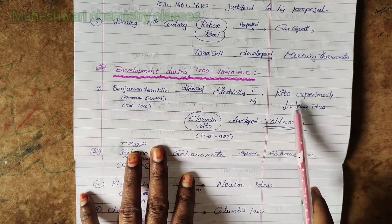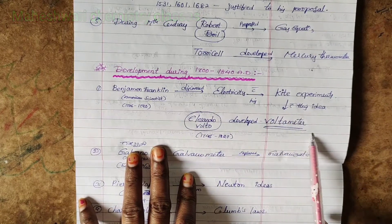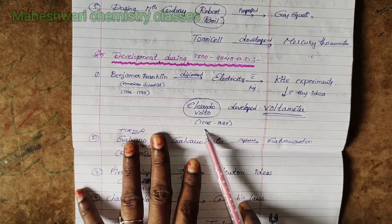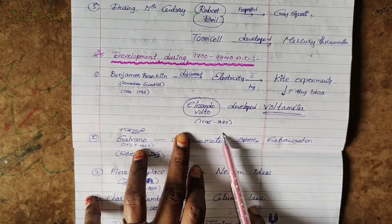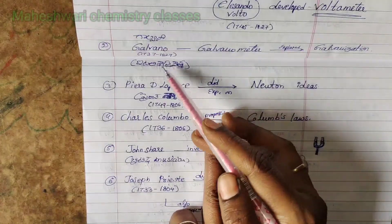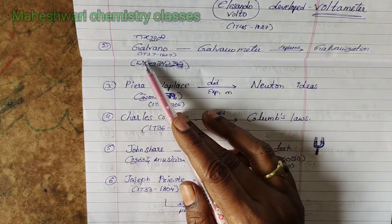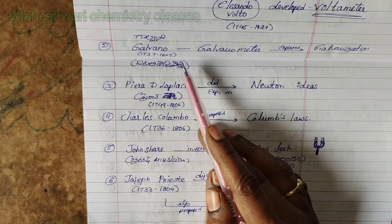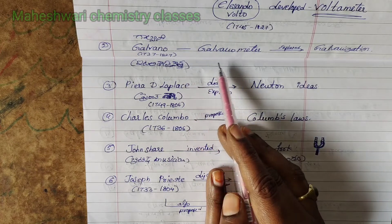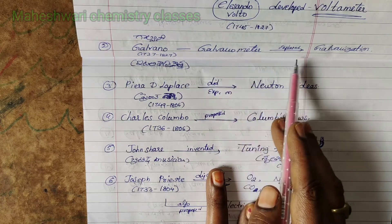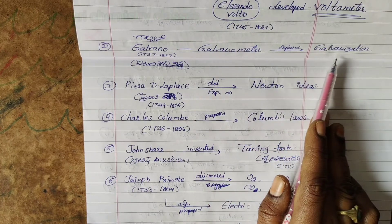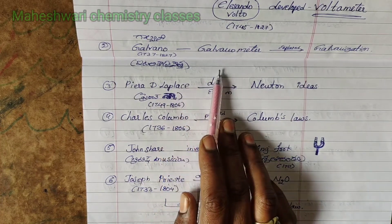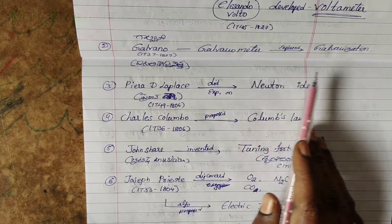Alessandro Volta, time period 1745 to 1827, made contributions to electricity. Galvani, 1737 to 1798, was an Italian scientist who discovered the galvanometer. Based on this, he explained galvanization.